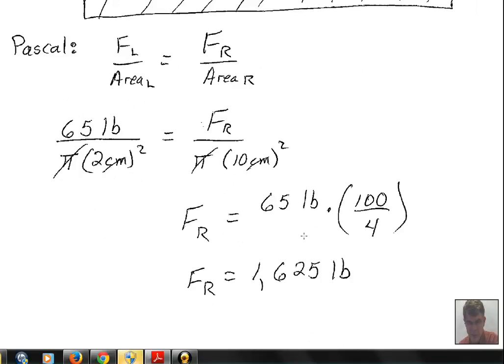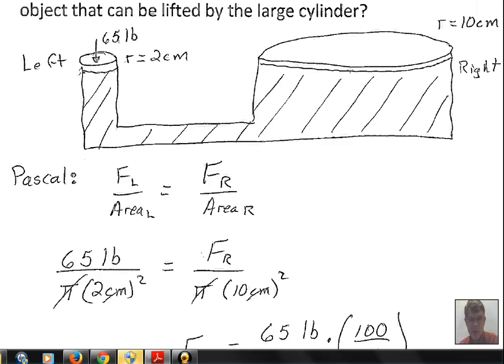1625 pounds. This is a machine - we've multiplied the output force through the use of Pascal's principle, and the ratio of the areas gives us a multiplication of the force.